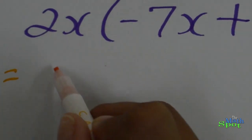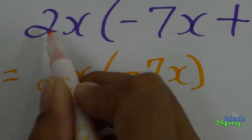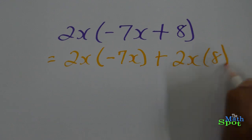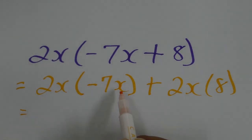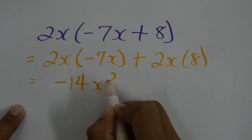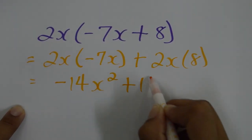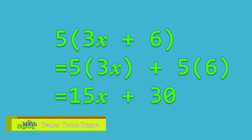This gives us 2x times negative 7x, and positive 2x times 8. Further simplifying: 2x times negative 7x gives negative 14x squared, and 2x times 8 gives 16x. And that's our answer. That brings us to the end of this lesson on the distributive law.